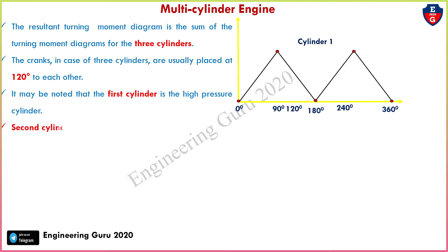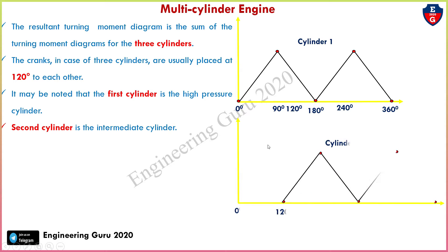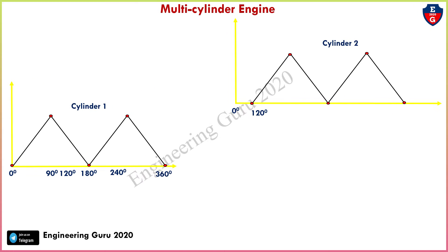The second cylinder is the intermediate cylinder. As noted, the cranks are placed at 120 degrees to each other, so the first cylinder angle is zero degrees and the second cylinder starts at 120 degrees. From 120 degrees: maximum, minimum, maximum, and minimum — this is the second cylinder crank angle position, which I call the intermediate cylinder.